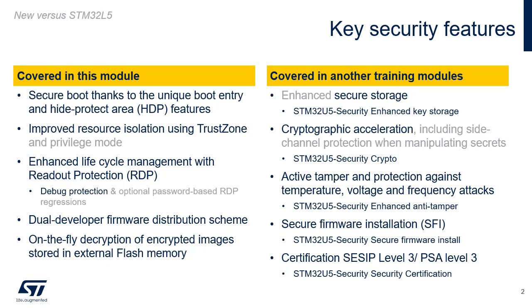This module describes the following key security features: secure boot, thanks to the unique boot entry and HDP (Hide Protection) area features; improved resource isolation using TrustZone and Privileged Mode, extended to securable IOs, memories, and peripherals; enhanced lifecycle management with Readout Protection or RDP, including debug protection and optional password-based RDP regressions; dual developer firmware distribution scheme using TrustZone, on-the-fly decryption, and RDP 0.5; and on-the-fly decryption of encrypted images stored in external flash memory with associated secure firmware installation.